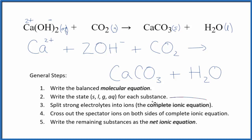This is the complete ionic equation. Next, we cross out spectator ions—those that are the same on both sides. But in this case, nothing is the same on both sides; all compounds are different. So the complete ionic equation is the same as the net ionic equation for calcium hydroxide plus carbon dioxide.